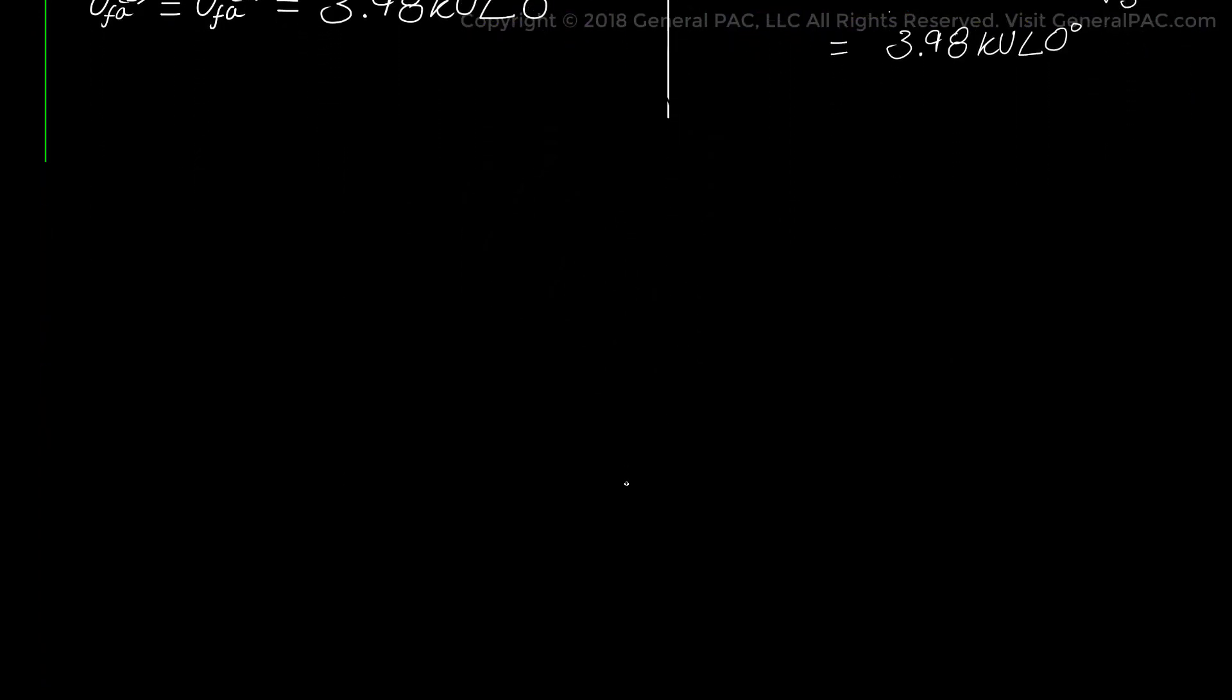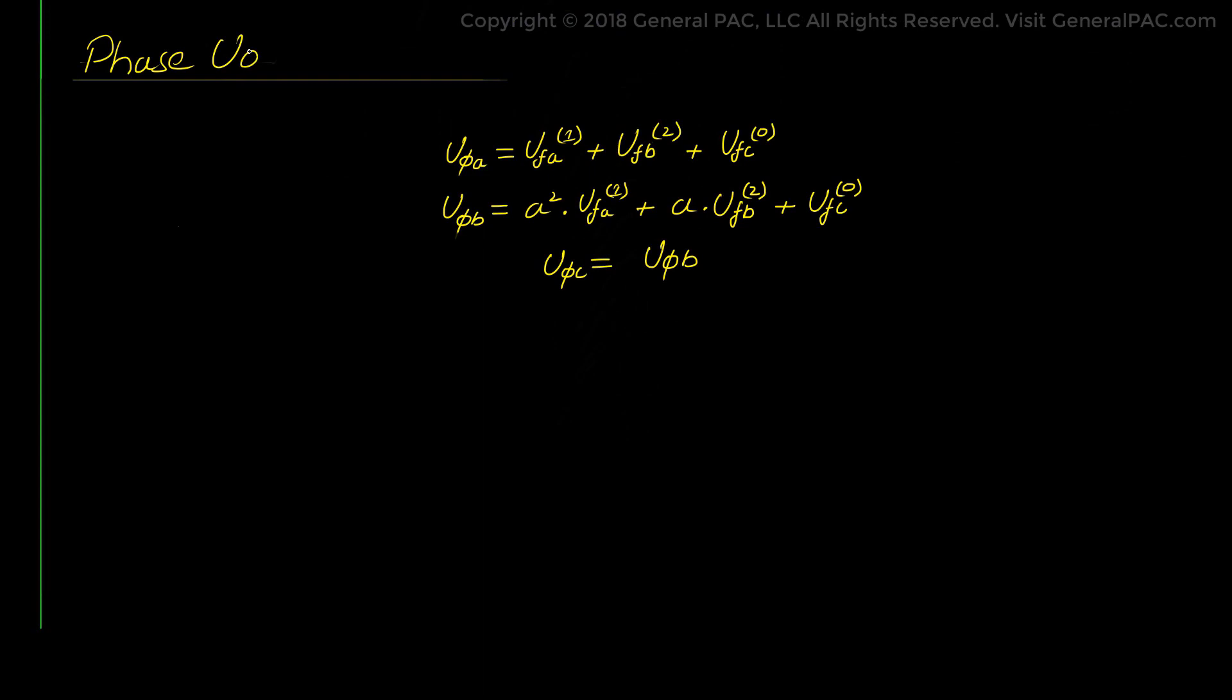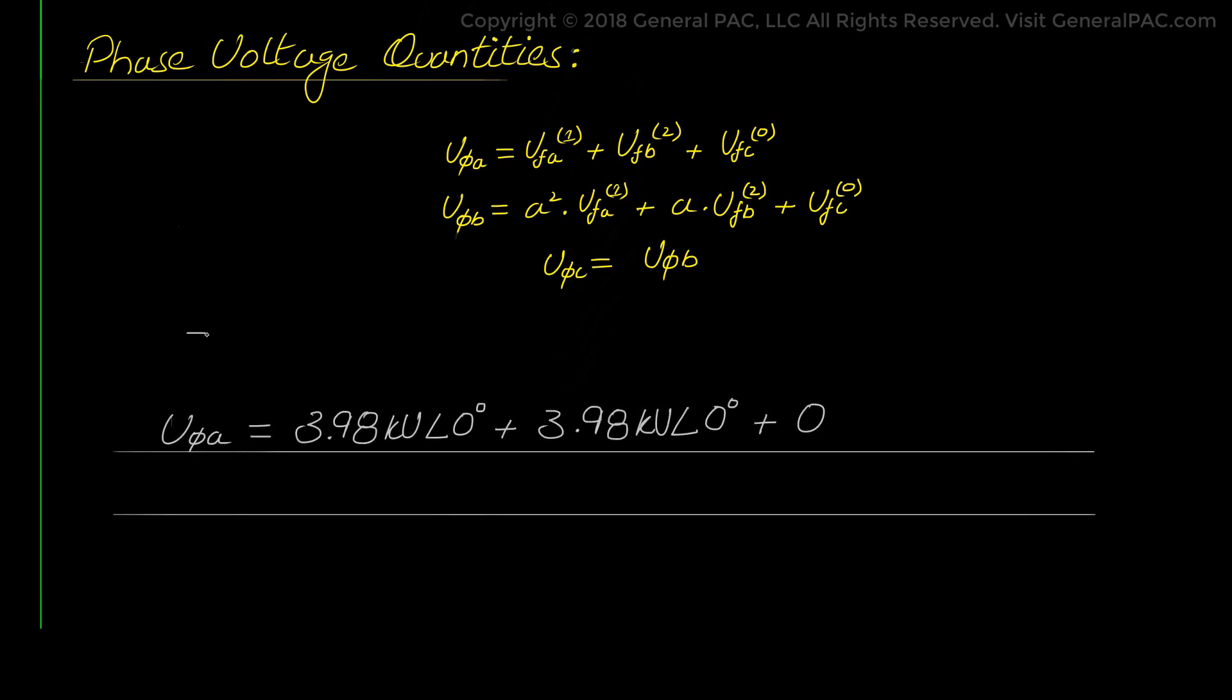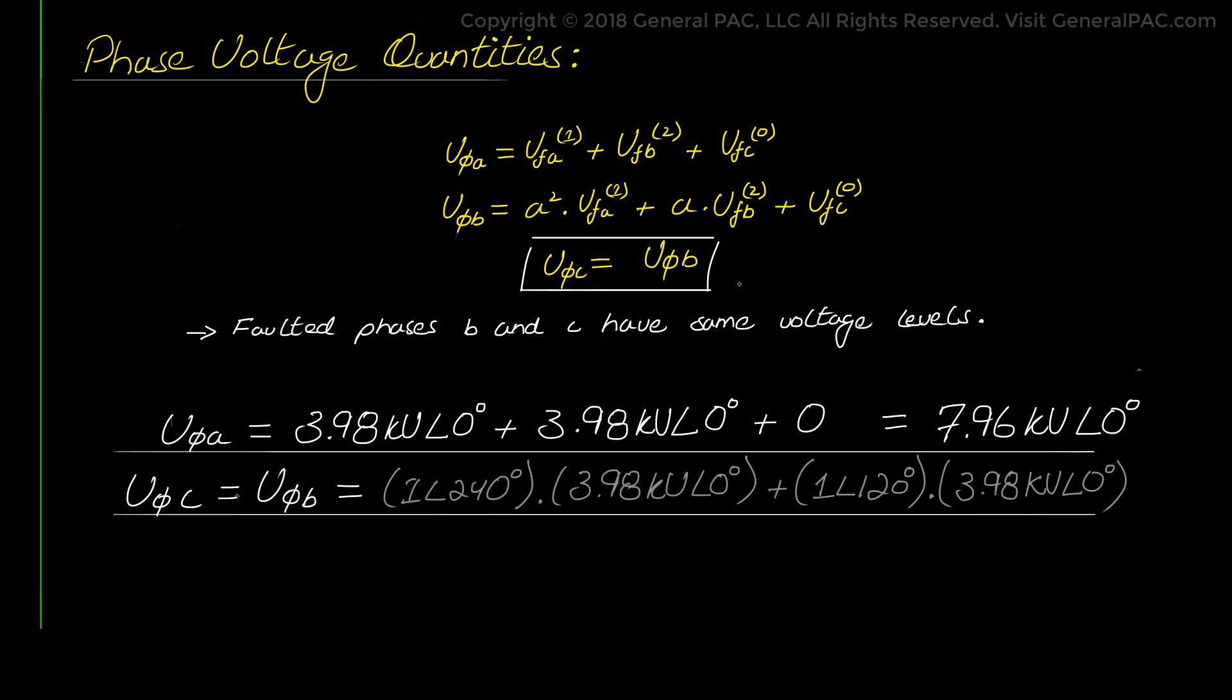Now we are left with the task of applying our familiar transformation equations to get the phase voltage values. And we do this by plugging in the calculated sequence components and the A operator, as shown below. Now we have the added advantage here because since faulted phase B and C will have the same voltage levels, V phase B equals V phase C, we will only have to calculate two phase voltages, which is V phase A and V phase B. Of which V phase A gives us 7.96 kV and VB and VC will equal 3.98 kV. Now this is quite an interesting answer,